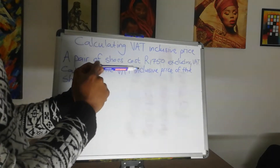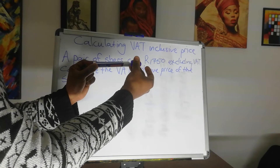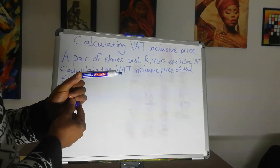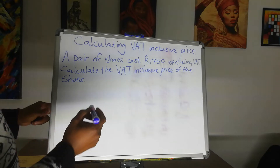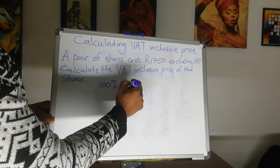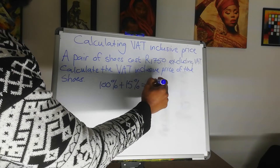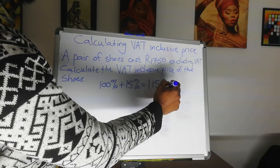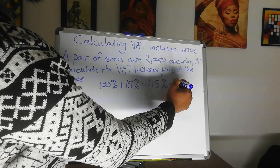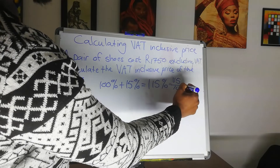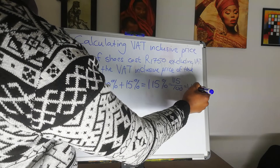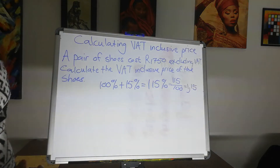We start the simple calculation with 100%, and then we add the VAT which is 15%, and that gives us 115%. This 115% you are going to convert to a fraction and then convert it further into a decimal number, which is 1.15. This is where the 1.15 comes from in our calculation.